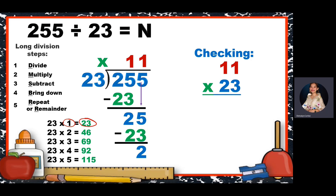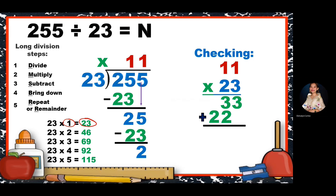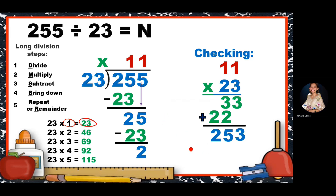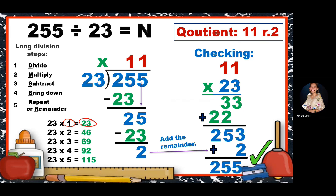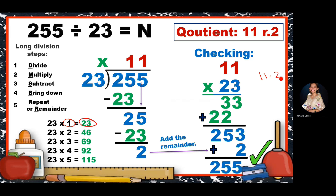For checking: 11 times 23 is 253. Our given number is 255, so does that mean the answer is wrong? We're not yet done — we have to add the remainder. 253 plus the remainder 2 gives us 255, which confirms our answer is correct. This is how you check when there is a remainder: add the remainder after multiplying the quotient and the divisor. The final answer is 11 remainder 2. Don't write 11.2 — that would be wrong. Write R: so 11 R 2.